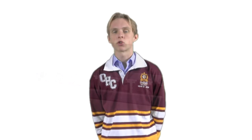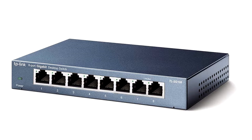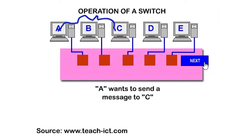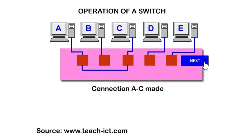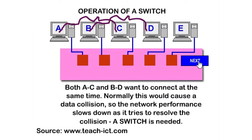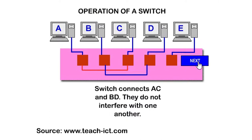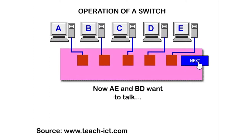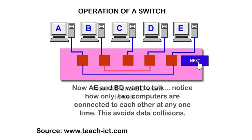Switches are extremely similar to hubs in that they relay data packets onto other computer systems connected to the device. However, unlike hubs, switches have the capability of examining which device the data packet is meant for, allowing for directed data communications. This means that a switch rectifies the predominant issue found in hubs, and due to direct network communications capabilities, data security and potential data collisions are not issues within a switch.